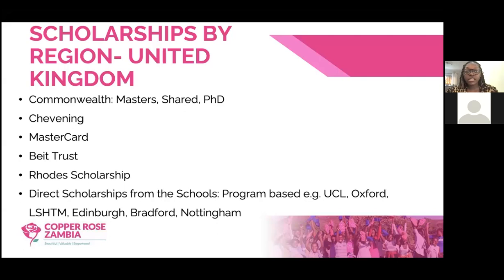There are also direct scholarships from universities. After you've figured out the program you want and applied to a school, you can take advantage of scholarships provided at the university level. Universities like University College London, Oxford, London School of Hygiene and Tropical Medicine, University of Edinburgh, Bradford, and Nottingham Trent provide faculty-based scholarships. These are available after you've been selected to the program — they may offer a 50% or 75% discount on fees.